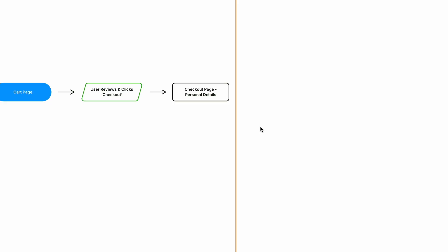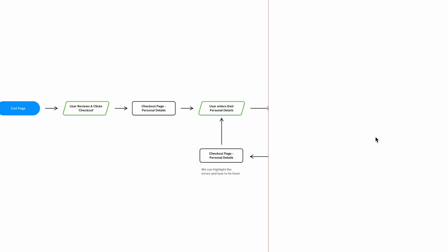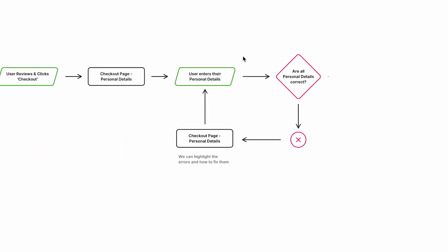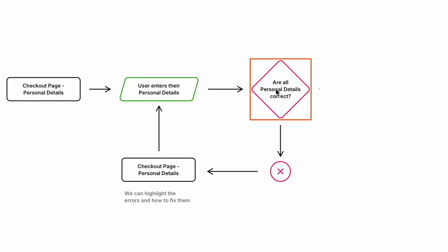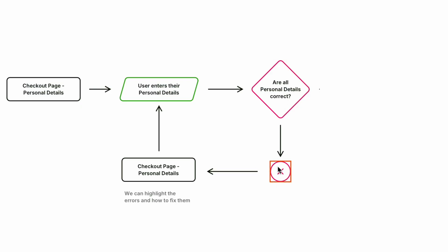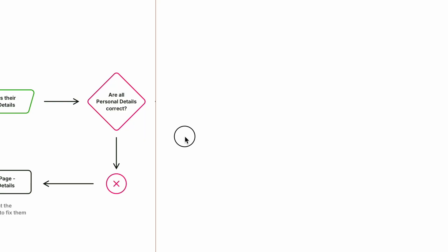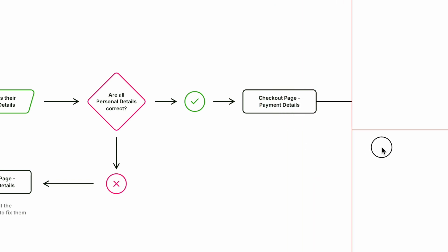Once a user enters their personal details, they click confirm. This is where a decision point comes in — a yes or no scenario: are all the personal details correct? If they are not, the user stays on the same page and errors are highlighted for them to fix. Once the details are correct, they are led to the next step — the payment details page, which has multiple sub-steps under it.